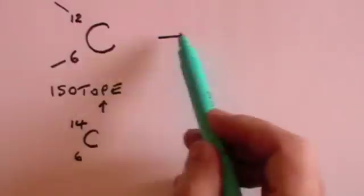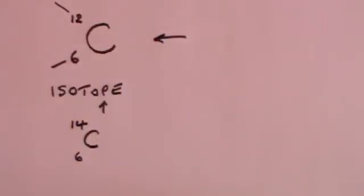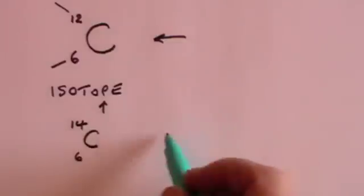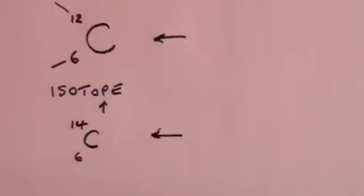This version of carbon, carbon-12, is stable because it doesn't decay. This version of carbon is radioactive, it decays. And the reason it does is because it's got slightly too many neutrons in its nucleus in order to maintain stability. And it needs to decay in order to get into a more stable atomic state.